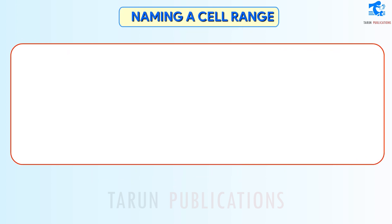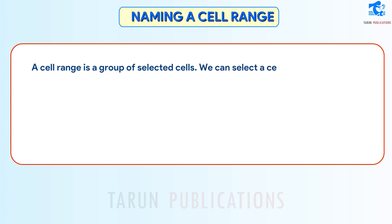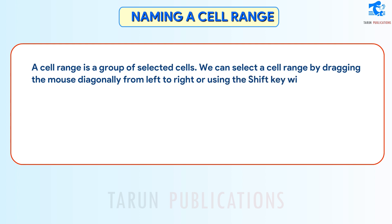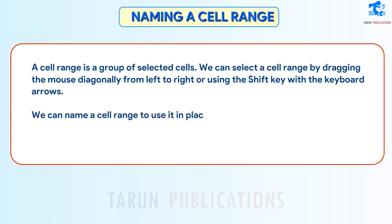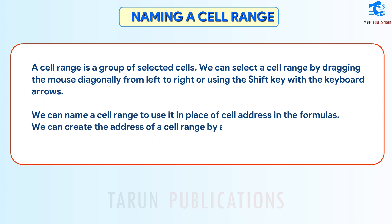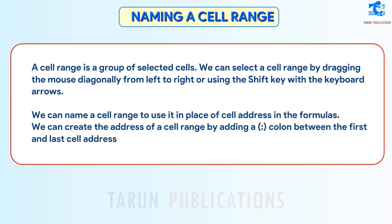Naming a Cell Range: A cell range is a group of selected cells. We can select a cell range by dragging the mouse diagonally from left to right, or using the Shift key with the keyboard arrows. We can name a cell range to use it in place of a cell address in formulas. We can create the address of a cell range by adding a colon between the first and last cell address of the range, for example A1:A7.